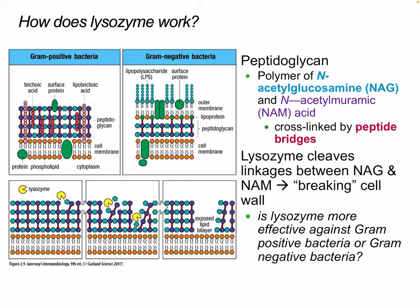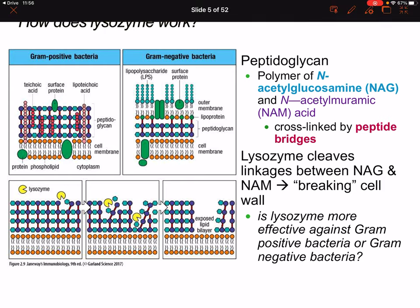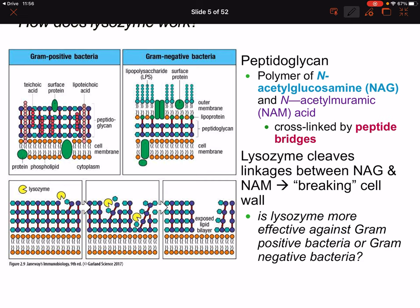Lysozyme is an important host defense. Here we can see two types of bacteria: gram-positive and gram-negative. The biggest distinction with gram-negative bacteria is the lipopolysaccharide, which we'll discuss extensively in this course. Peptidoglycan is a polymer of N-acetylglucosamine (NAG) and N-acetylmuramic acid (NAM), cross-linked by peptide bridges. Lysozymes can cleave linkages between NAG and NAM, breaking the cell wall.